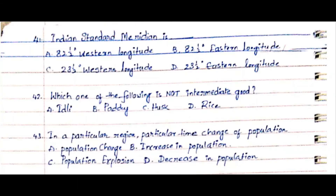Question 41: Indian Standard Meridian is. Option A. 82.5 degrees western longitude, Option B. 82.5 degrees eastern longitude, Option C. 23.5 western longitude, Option D. 23.5 eastern longitude. The answer is Option B. 82.5 degrees eastern longitude.